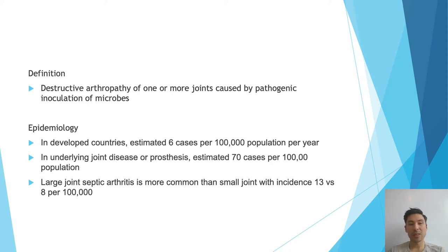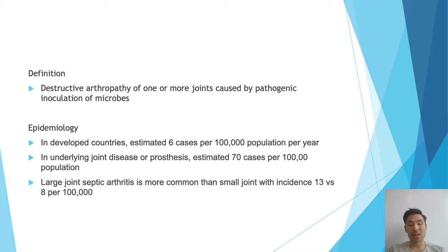In developed countries, cases occur about 6 every 100,000 population. And in those with an underlying joint disease or prosthesis, it's estimated to be about 70 cases per 100,000.